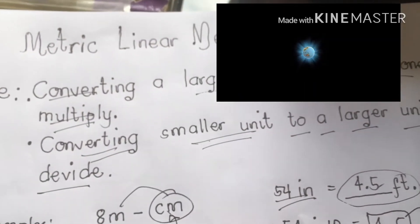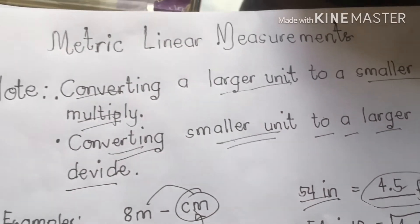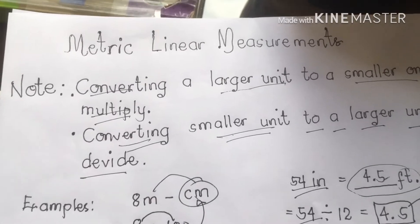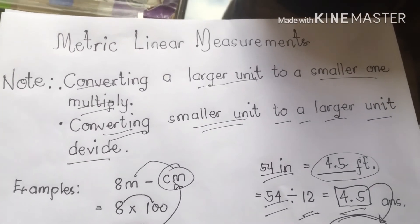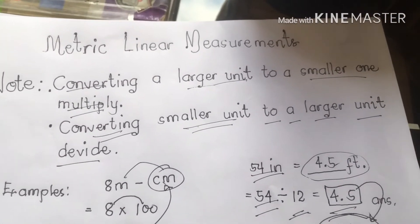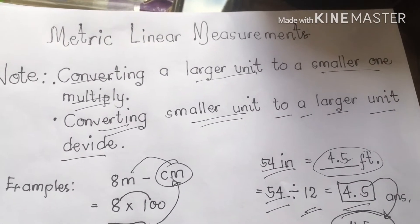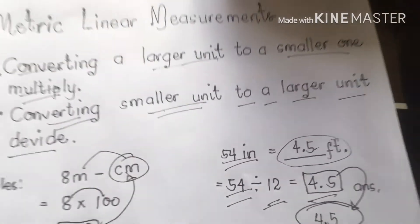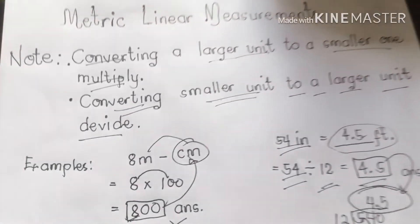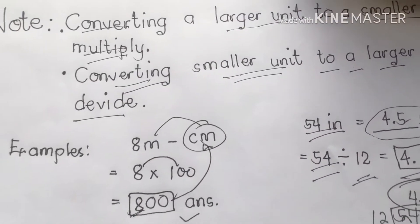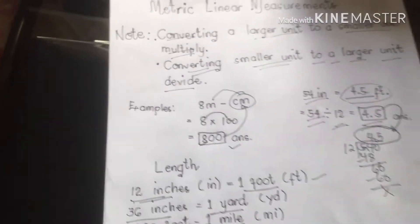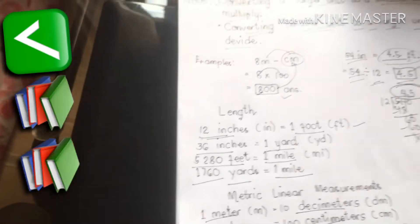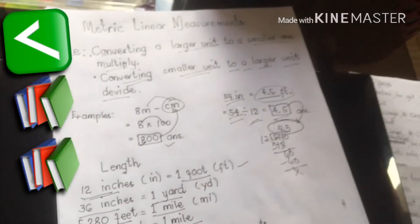This is what we call metric linear measurements in conversion class. Again: converting a large unit to a smaller one, multiply it. Converting a smaller unit to a larger unit, divide it. Okay, we have a drill — here we go.